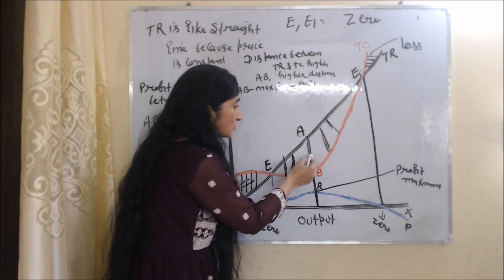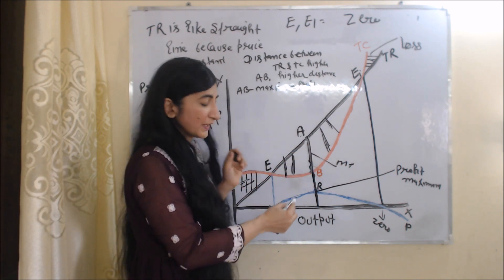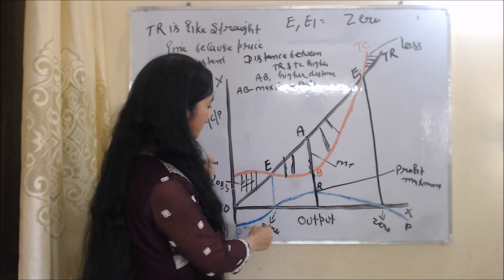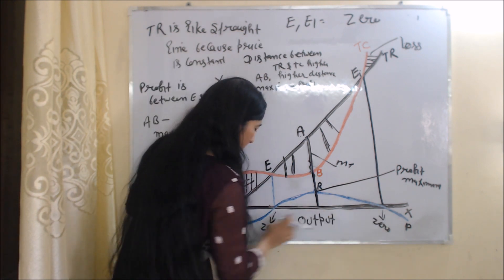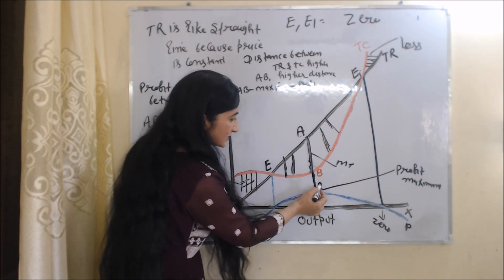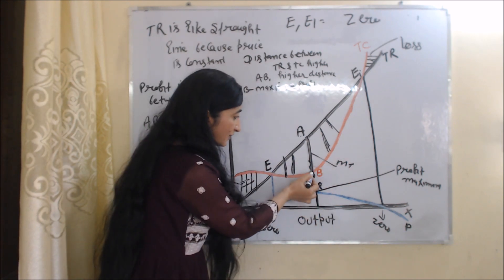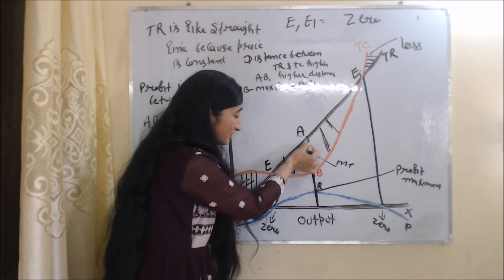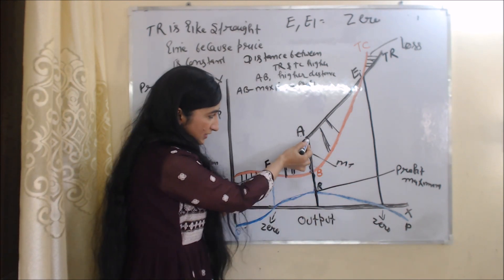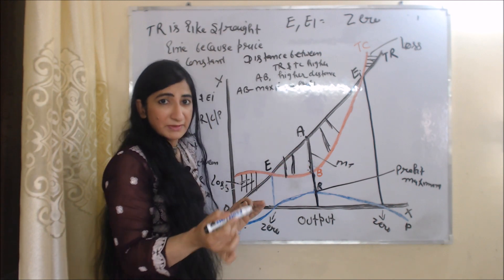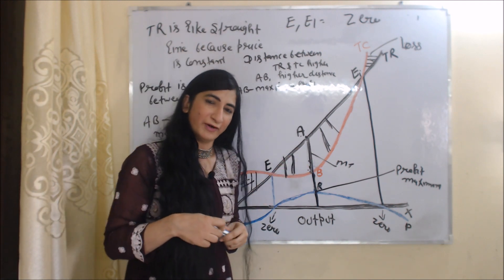The AB distance shows the maximum profit of the firm. We can also see maximum profit with the help of the profit curve. Point R on the PP profit curve shows maximum profit, because at point R the gap between TR and TC is maximum — this AB gap is the maximum gap, showing maximum profit of the firm.